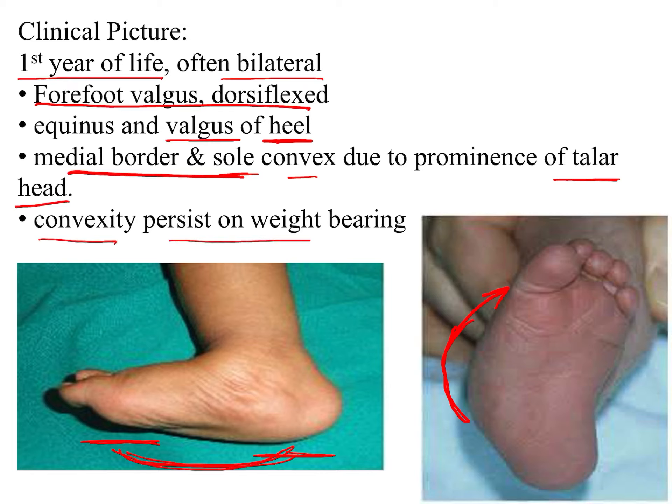After the X-ray is done, we need to know what to look for. There are many angles but three important ones. Two angles are on the lateral view: the first is the lateral talo-first metatarsal angle — between the talus bone and the first metatarsal. The second is the lateral talo-calcaneal angle — between the talus and the calcaneum. The third angle is on the AP view, again between the talus and the calcaneum.